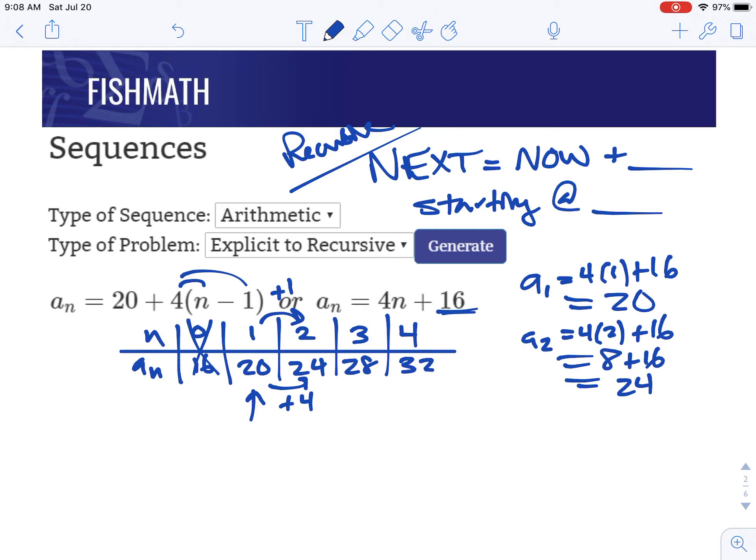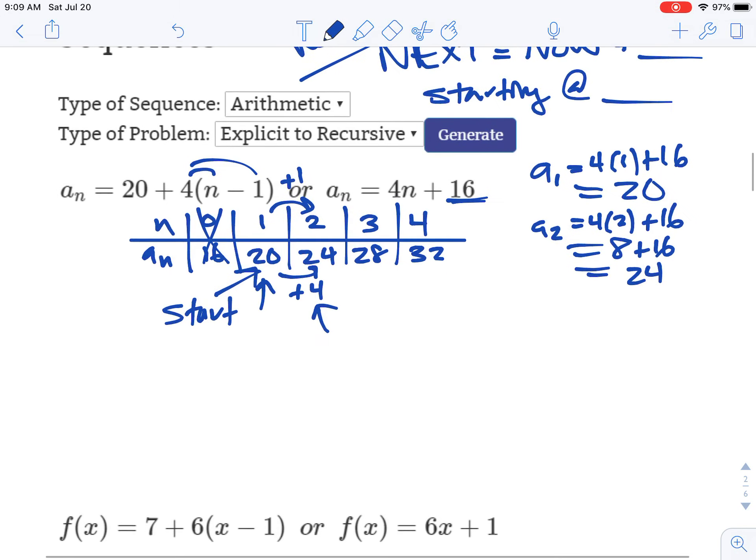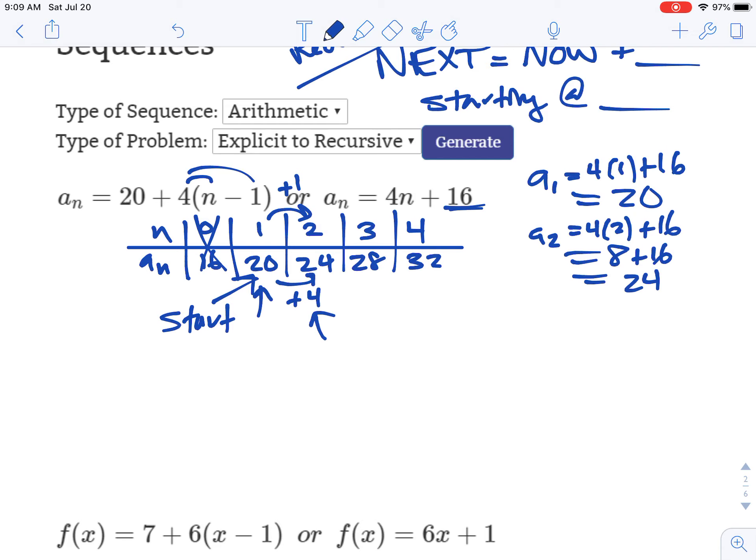So for our recursive format, we want to say start at the first term and then increase by this plus 4. And it really isn't too bad to write that recursively. So think about it first using next now. The next term would be the current one plus 4, because we're changing by plus 4 every time. And then we're going to start at 20. That's how we make this sequence, start at 20 and increase by 4 every time.